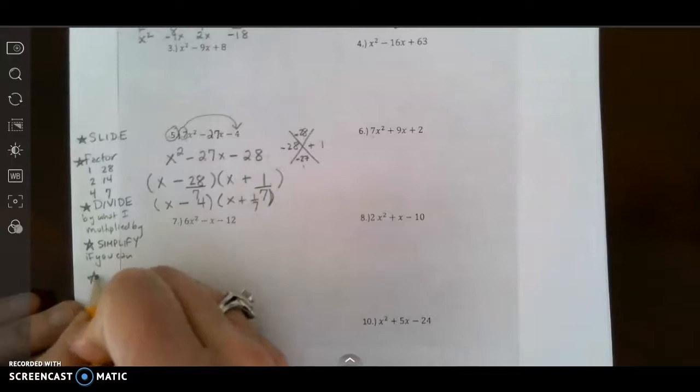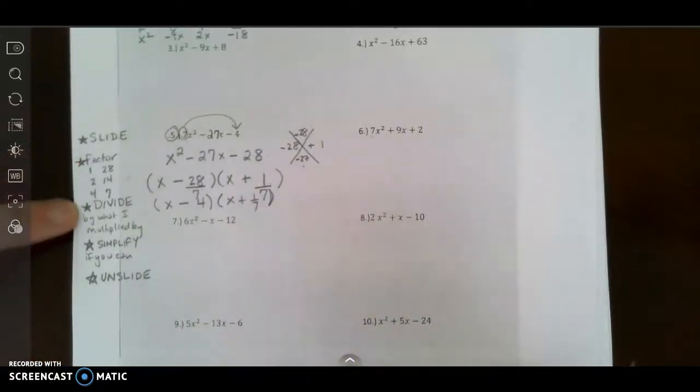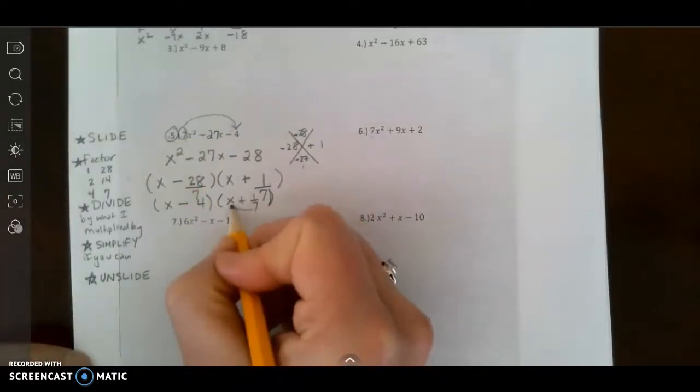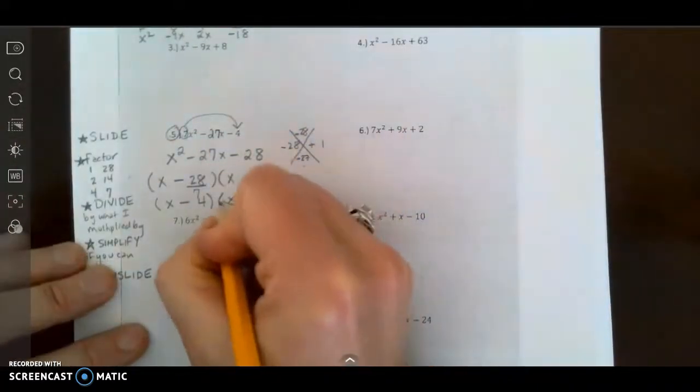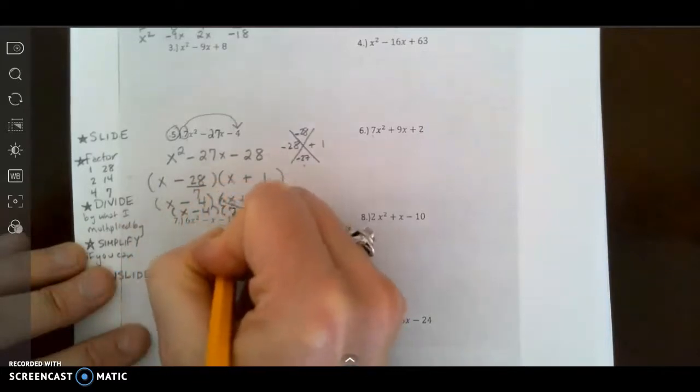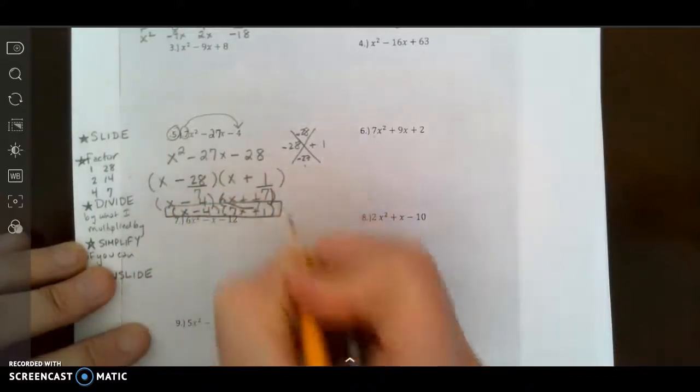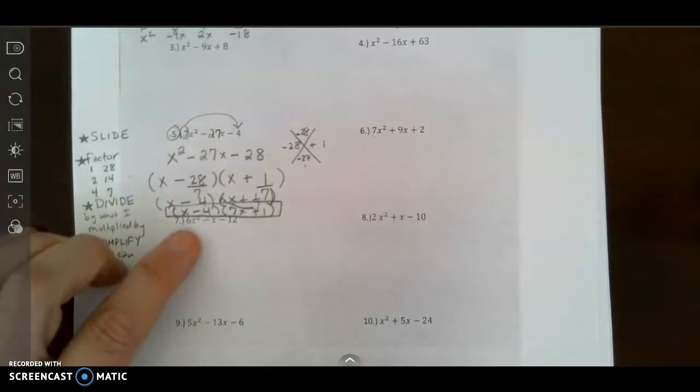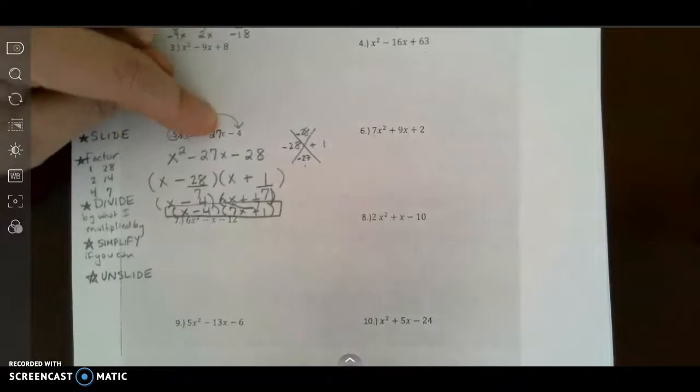And now the final step is to unslide. So slide, factor, divide, simplify, unslide. Unslide right there. That's going to now go to the front. And I get x minus 4 times 7x plus 1. And if you were to check that and FOIL that, you will get 7x squared minus 27x minus 4.